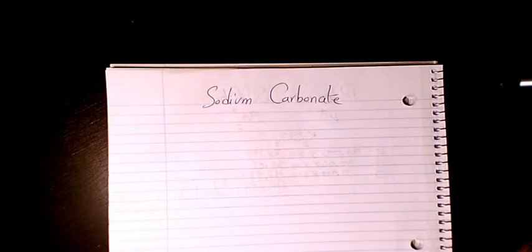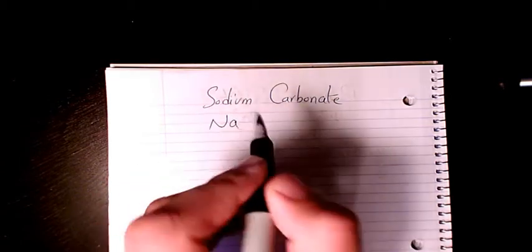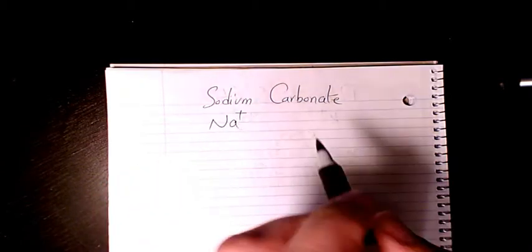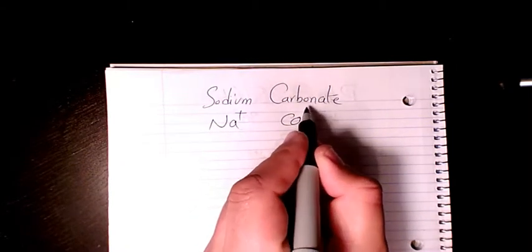So sodium carbonate. I start with the cation sodium, which is Na, belongs to group one so it's plus one. And carbonate is CO3, that's the polyatomic ion with the charge of negative two.